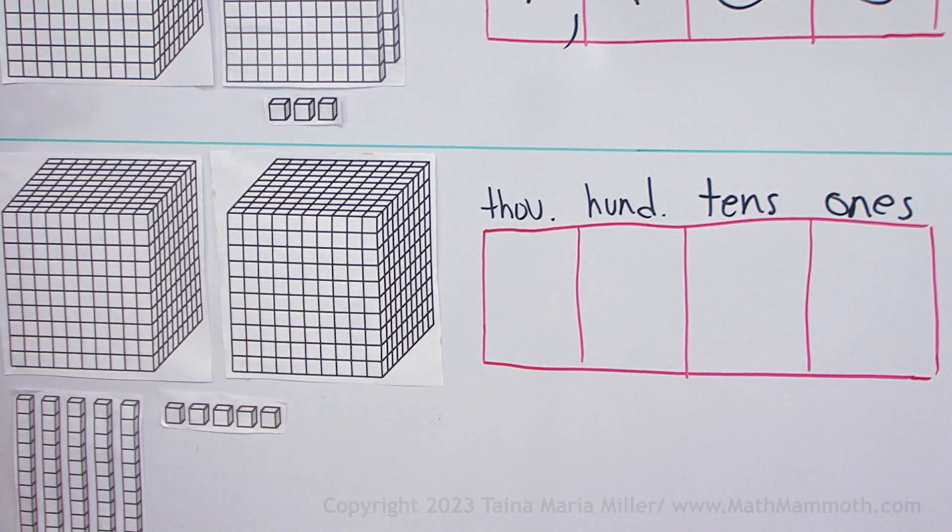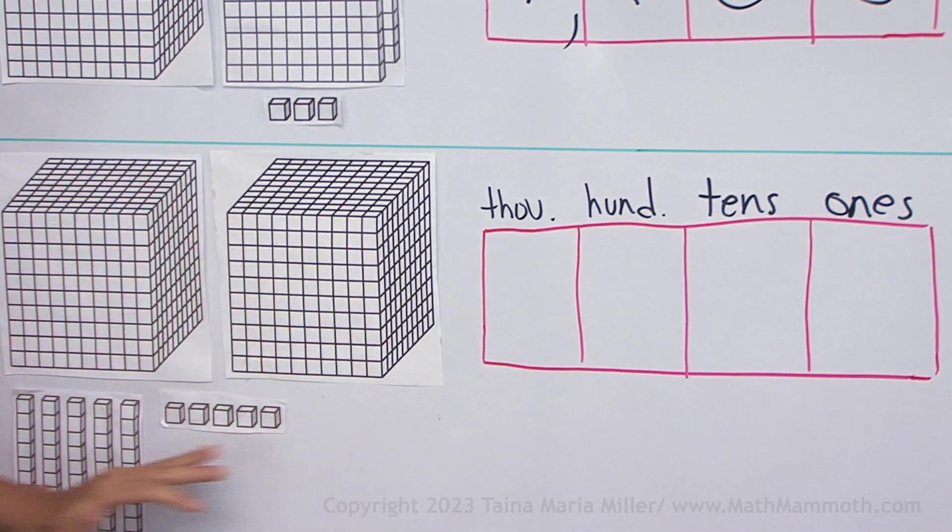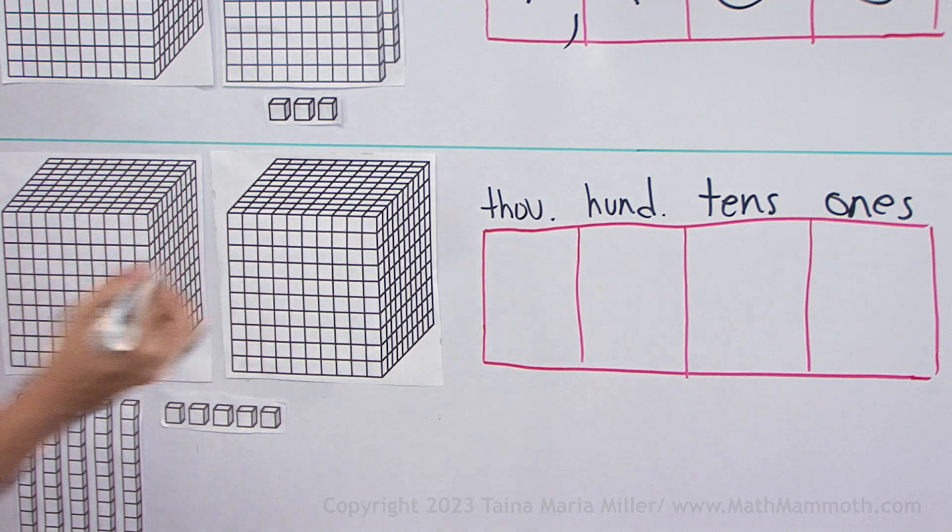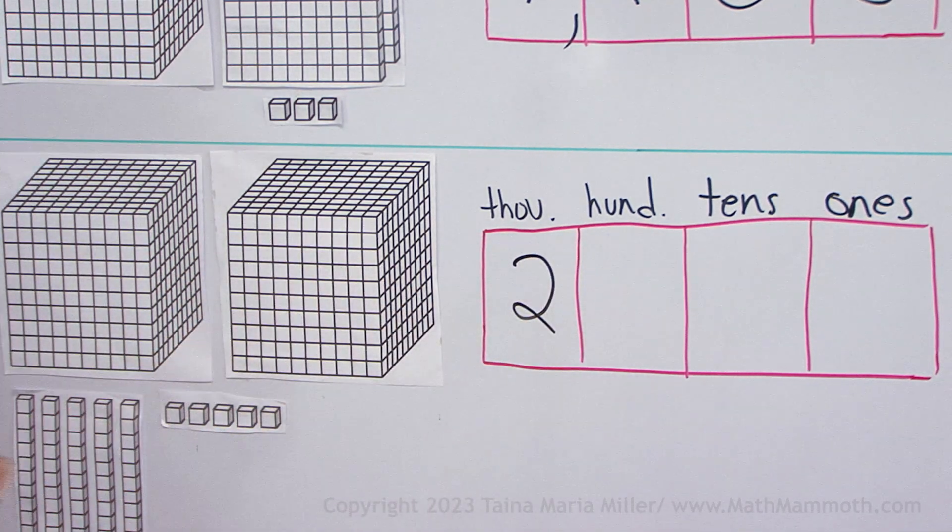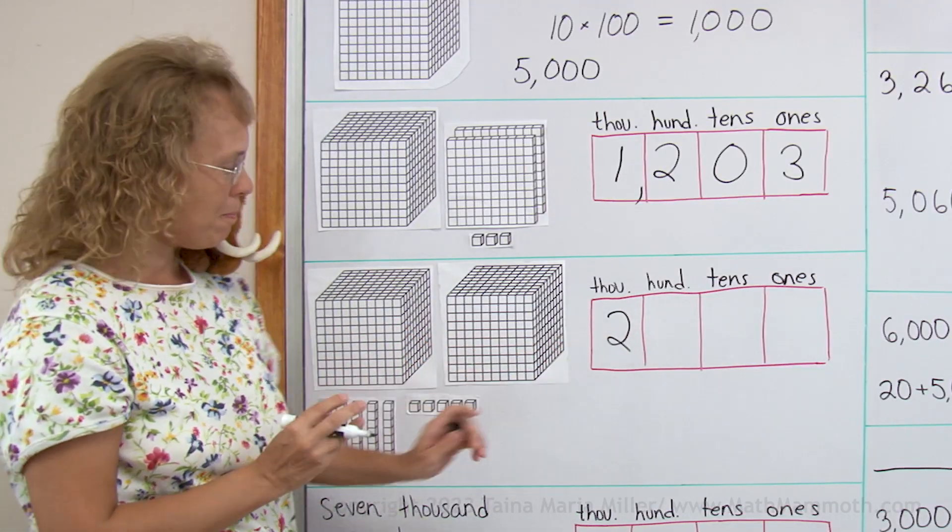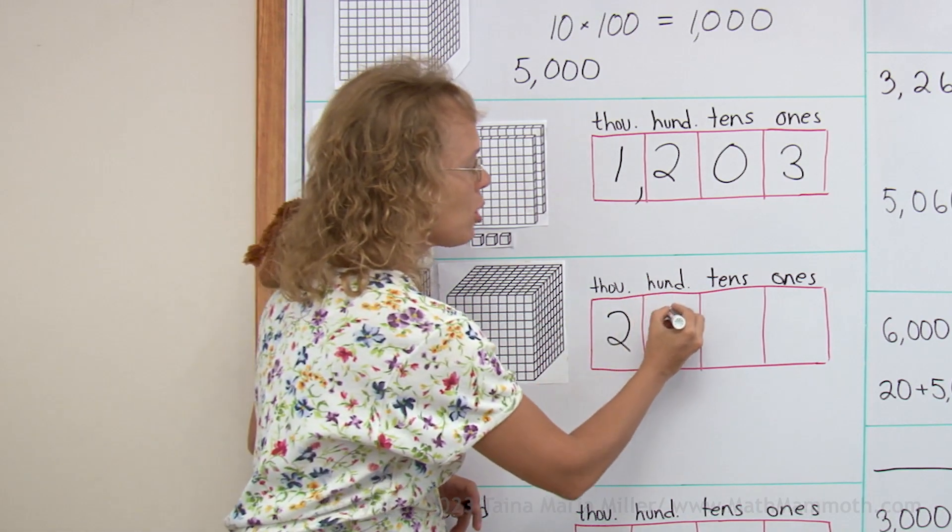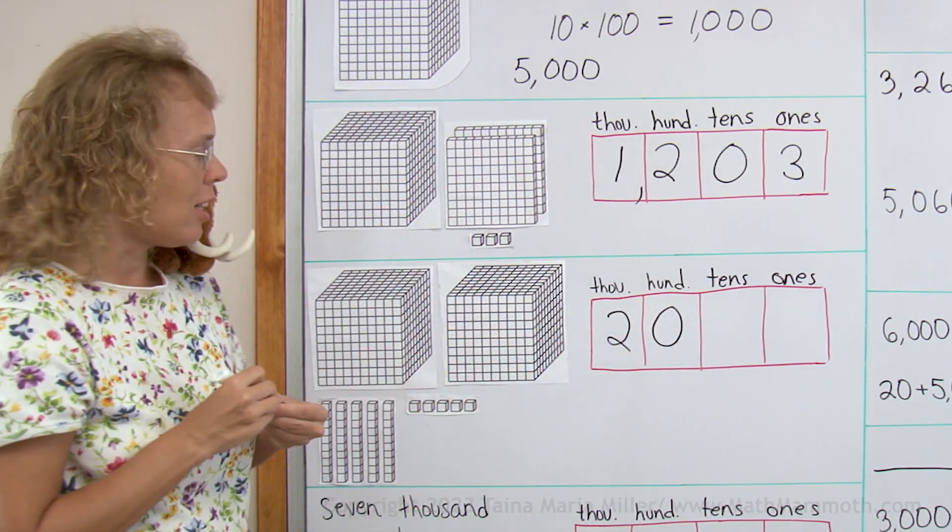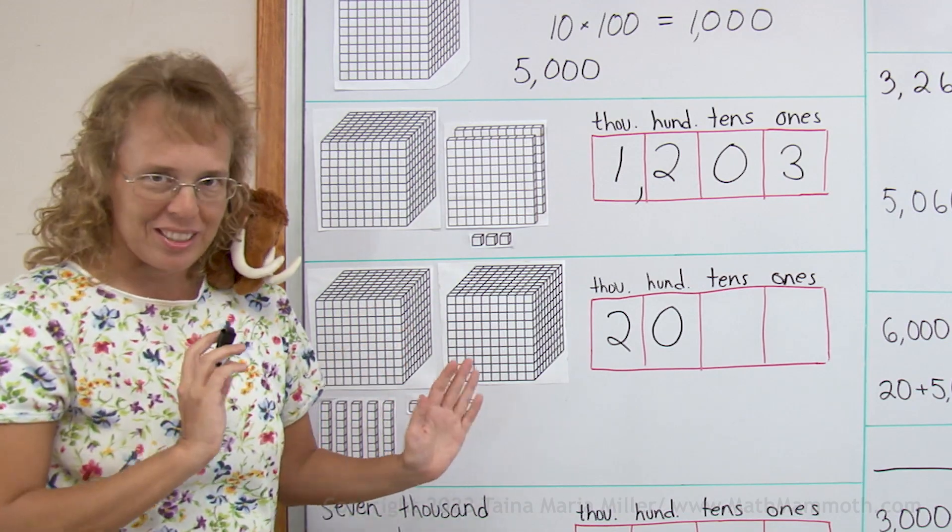How about this one? Can you tell what number is represented here? Clearly we have two of these thousands, two thousand and then hundreds, no hundreds. So put a zero there. This is very important. You have to have a zero if there are no hundreds or no tens or no ones.